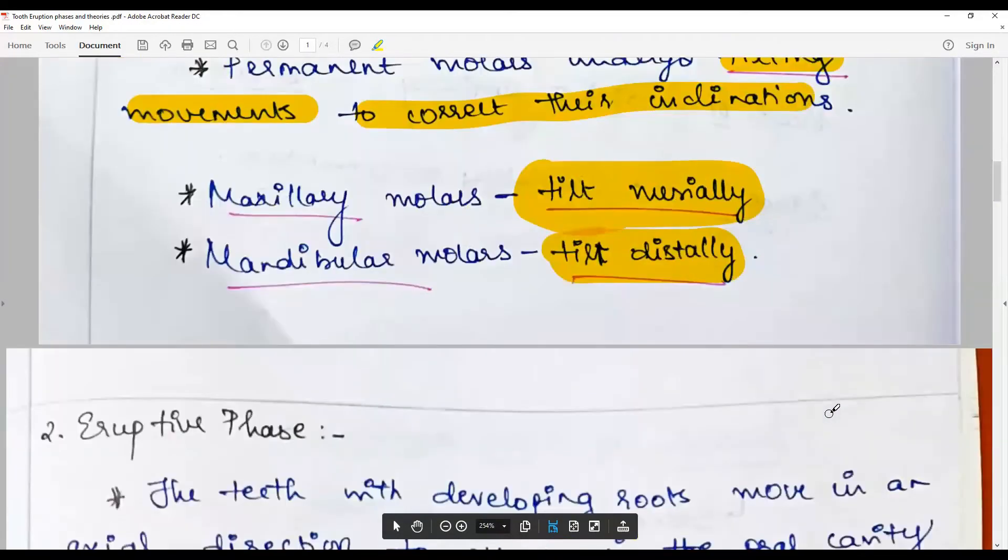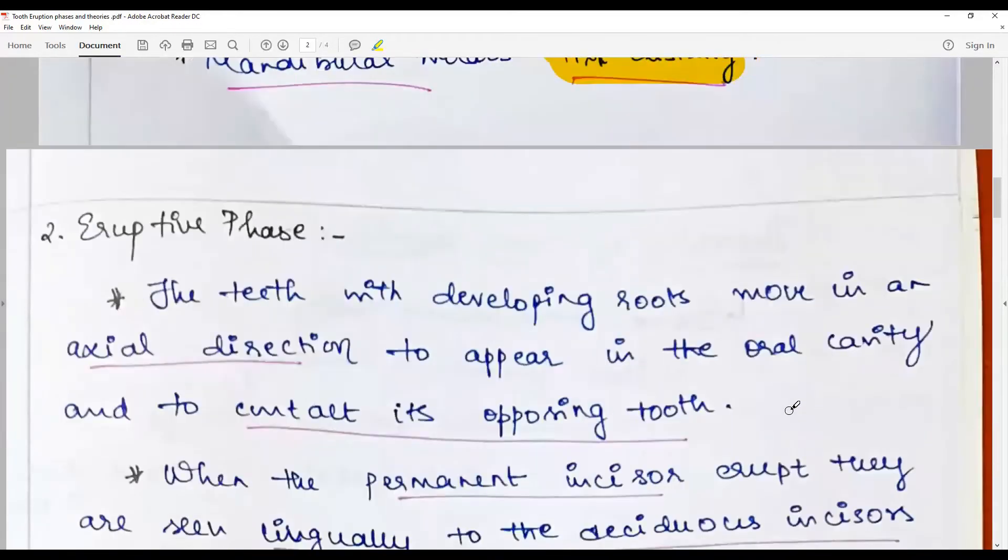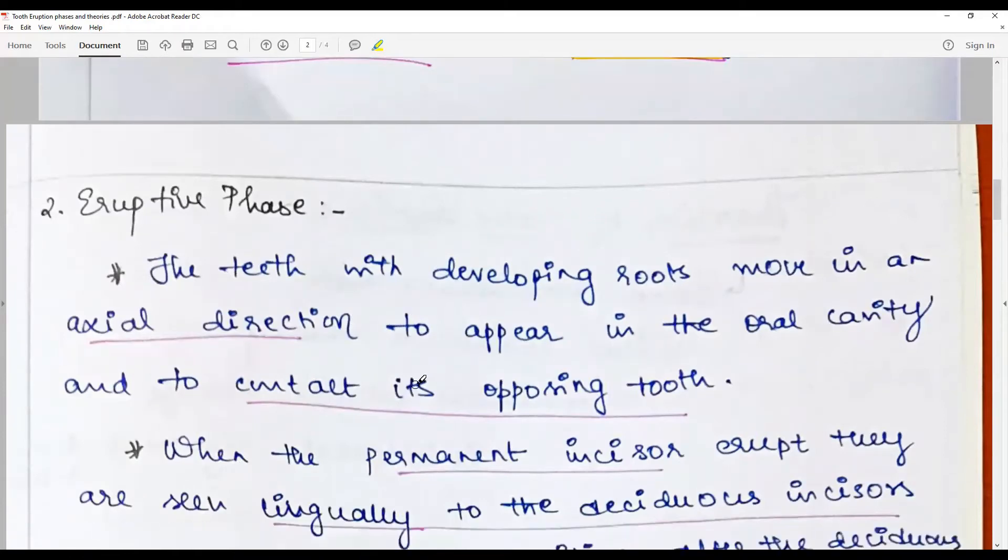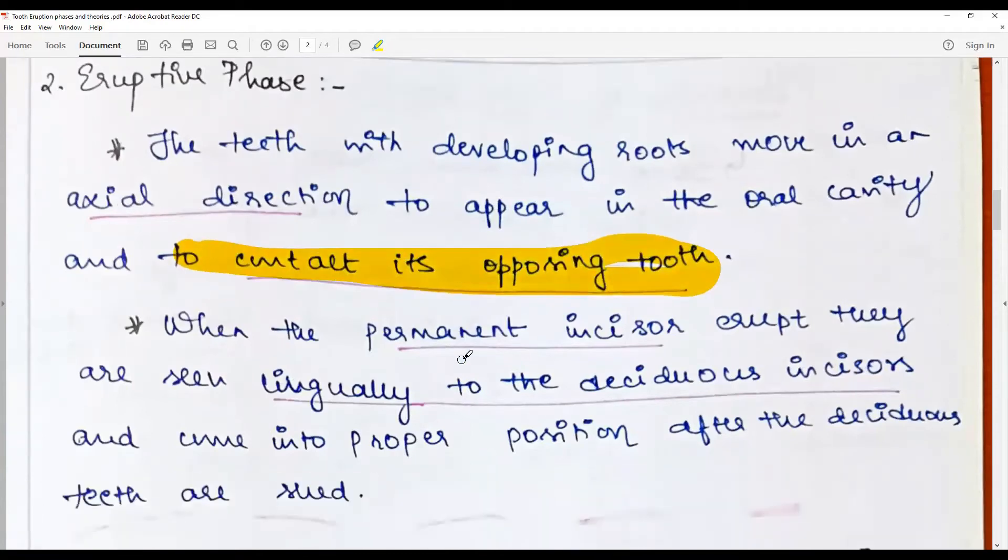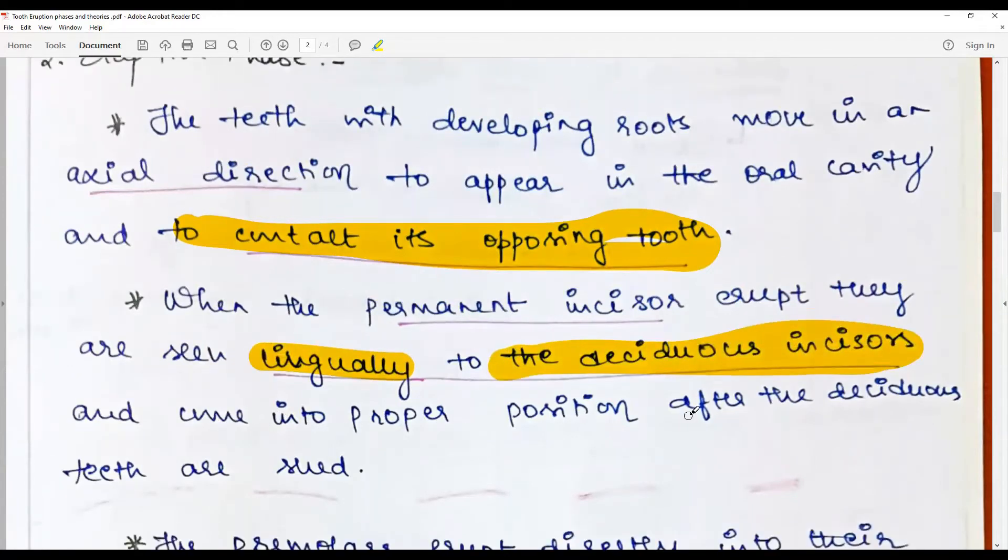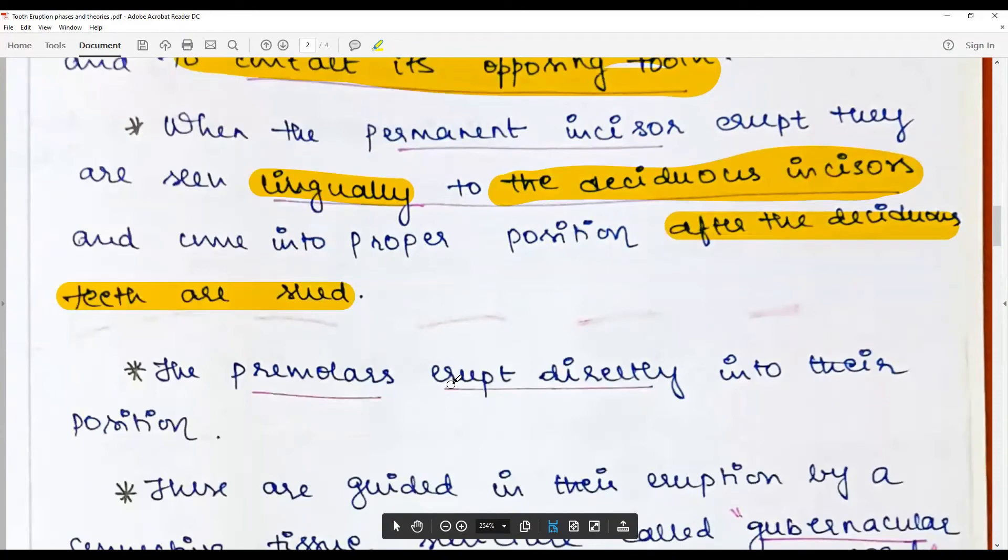Eruptive phase: the teeth developing move in an axial direction to appear in the oral cavity and to contact its opposing tooth in the opposite arch. When the permanent incisors erupt, they are seen lingually to the deciduous dentition or deciduous incisors and come into proper position after the deciduous teeth are shed.